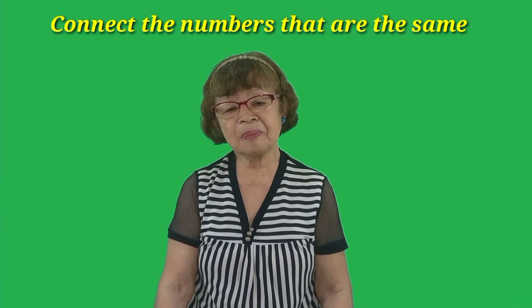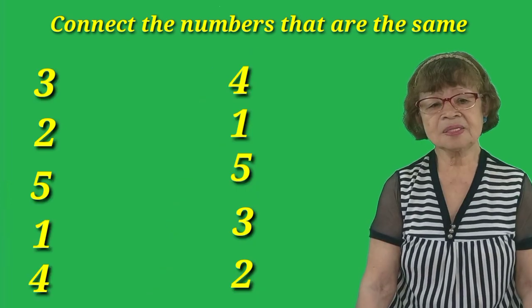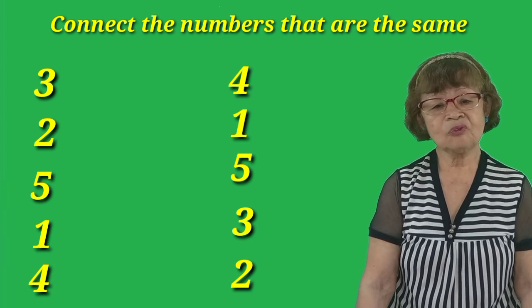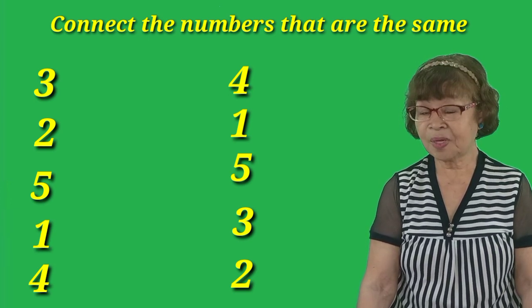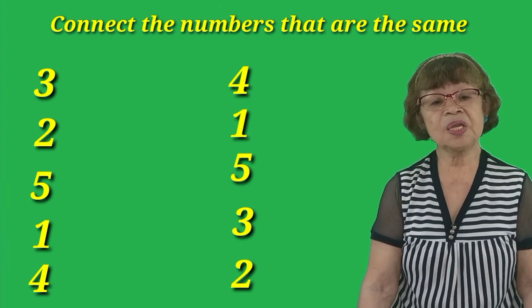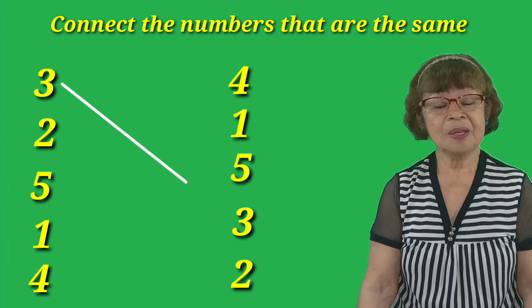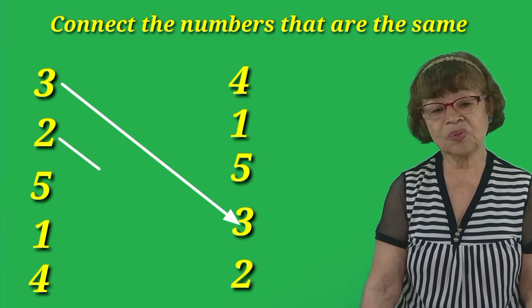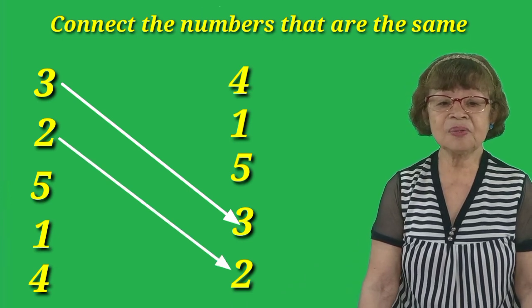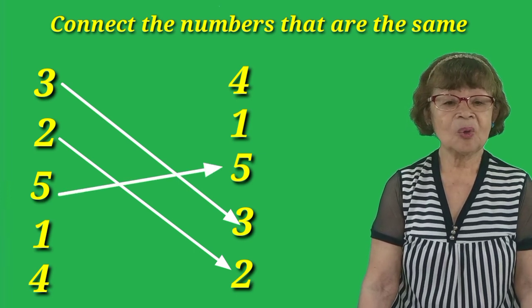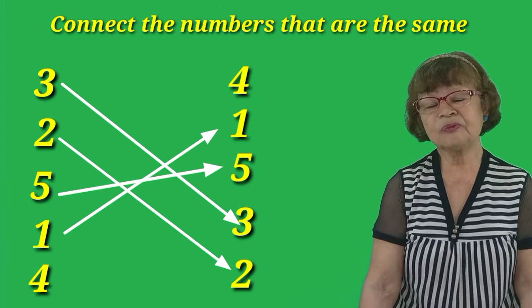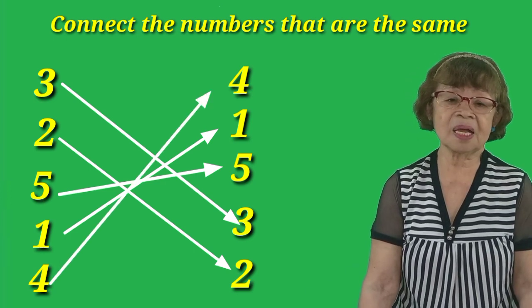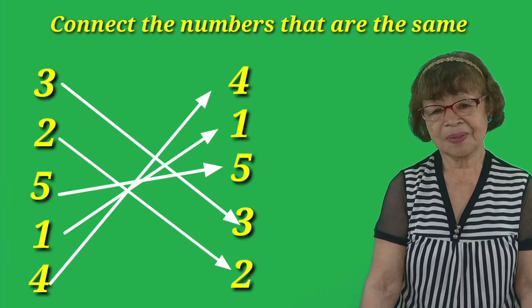Hi Ken Kids again! We go now to our next activity — it's just the same, we connect the numbers to the same numbers. The first column is 3, 2, 5, 1, 4 and the second column is 4, 1, 5, 3, 2. We connect 3 to number 3, number 2 we connect it down because number 2 is at the bottom, and 5 we connect to number 5.